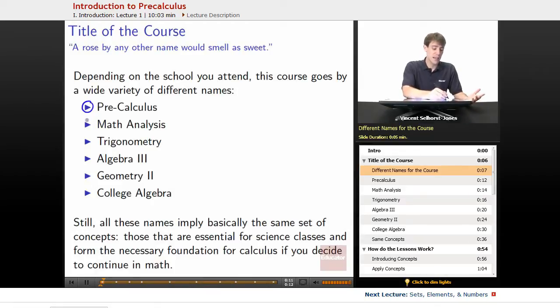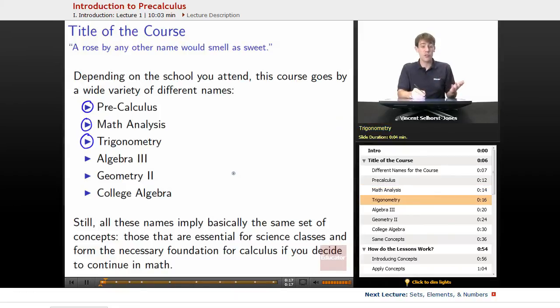Pre-calculus, math analysis, it might be called math analysis with trigonometry, simply trigonometry, it might be called pre-calculus and trigonometry. It could be called algebra 3, might be called geometry 2, might be called algebra 3 and geometry 2. It might be called college algebra if you're in a college course, it might be called college algebra with trigonometry and it might be called something different from all of these.